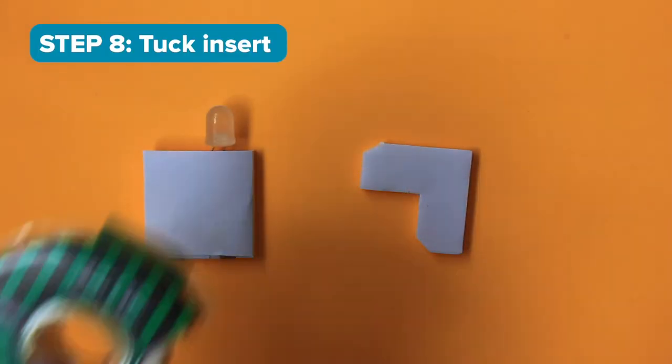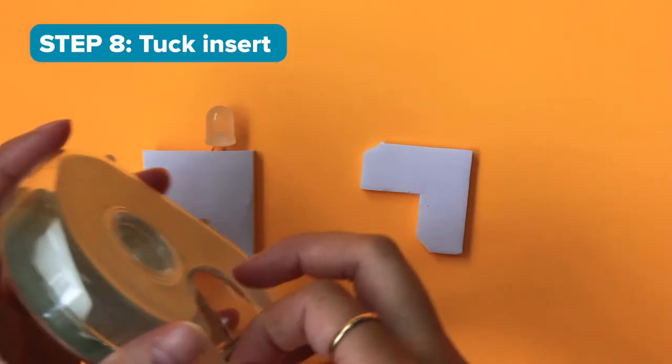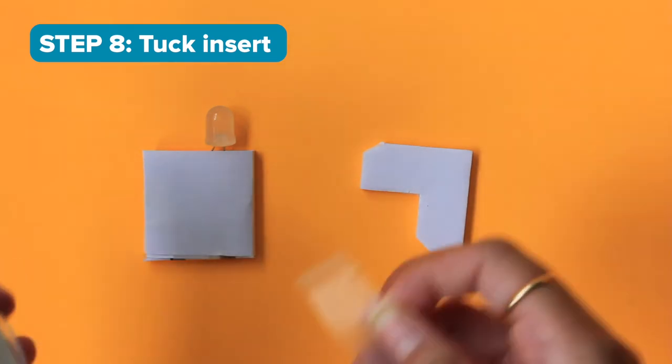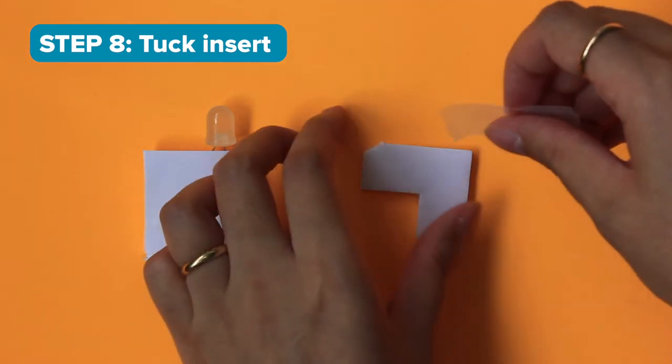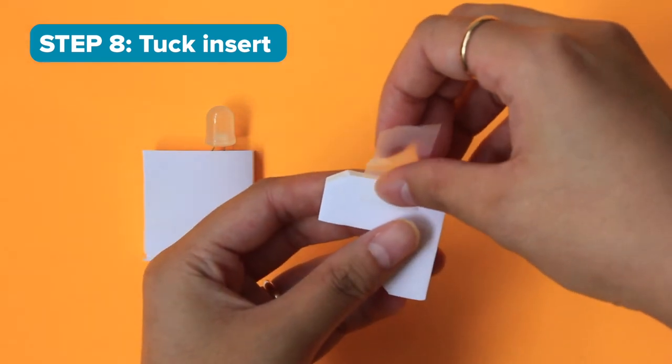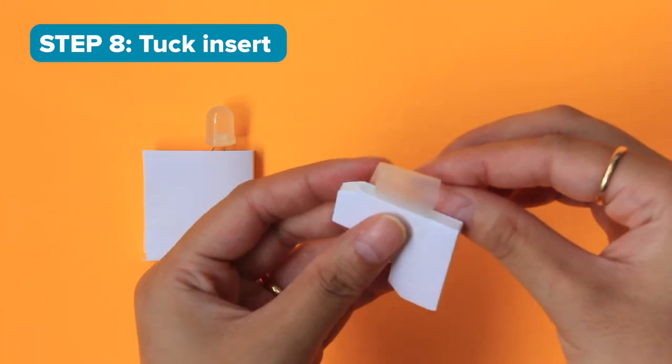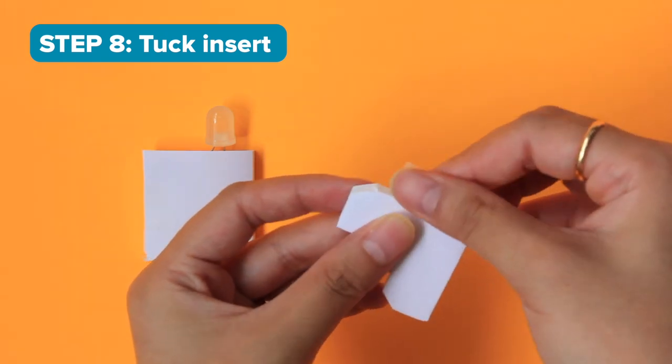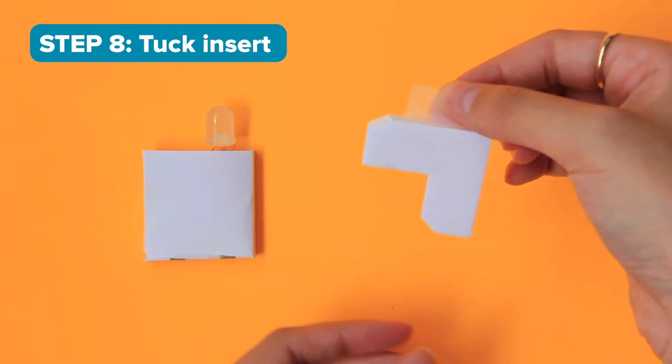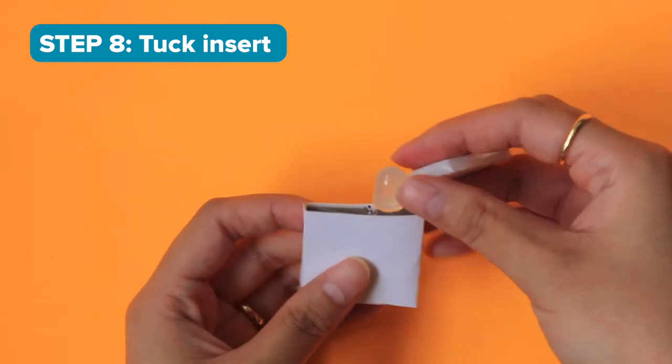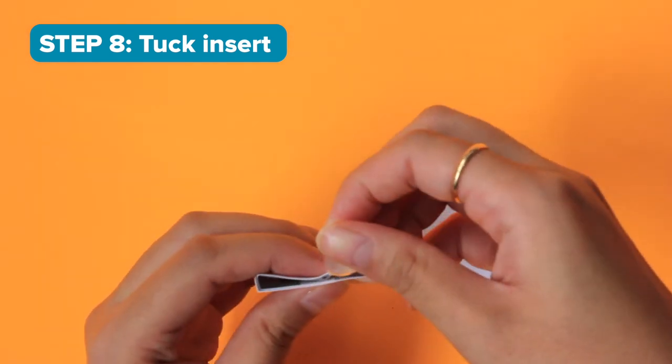Step 8. Get your insert piece. Stick a piece of regular tape on top of the insert so that you can create a tiny tab to pull your insert in and out easily. Now tuck the insert into the box so the battery stays in place.